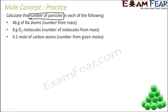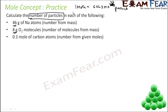Here we have to find the number of particles in a given sample. In the last example we found mass; here we find number of particles. The golden rule is: 1 mole is 6.023 into 10 to the power 23 particles for any ion, molecule, or atom. And 1 mole is also equal to the molecular mass in grams.